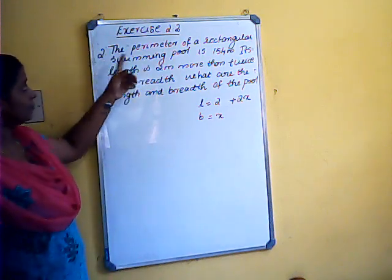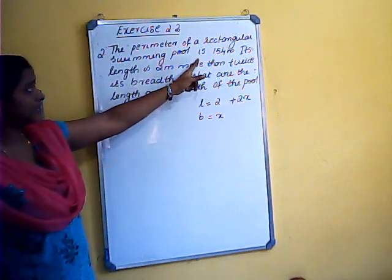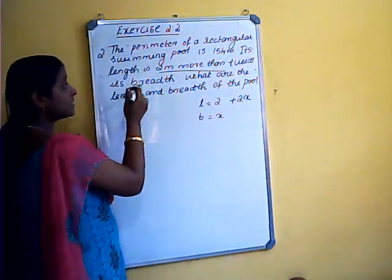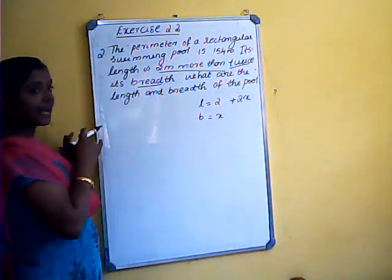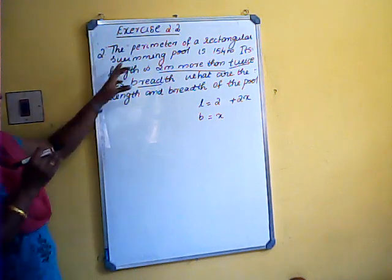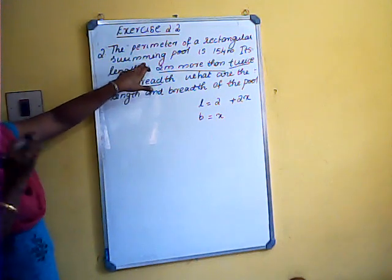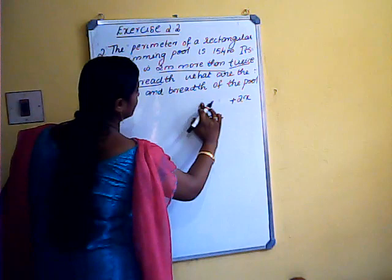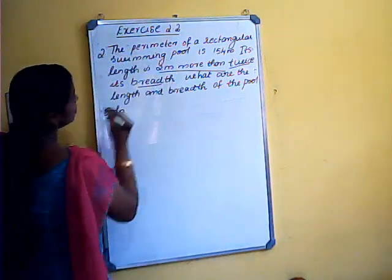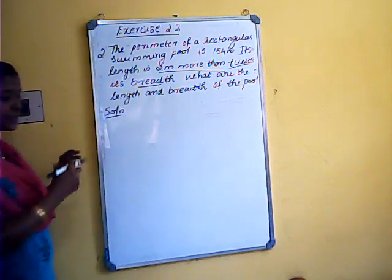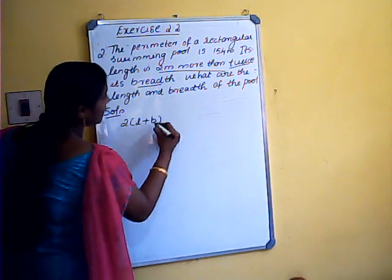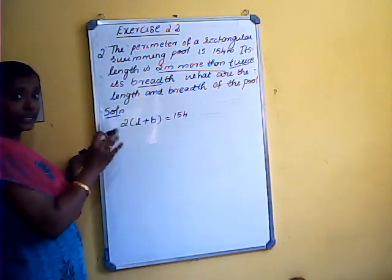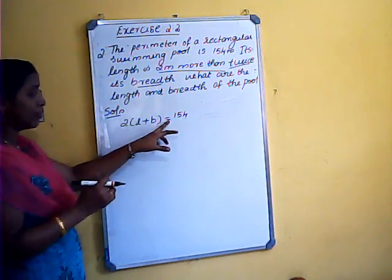Next problem — the second problem: the perimeter of a rectangular swimming pool is 154 meters. Its length is 2 meters more than twice its breadth. We want to find the length and breadth. Before solving, recall that the perimeter of a rectangle is 2 into (l plus b), which equals 154 meters.